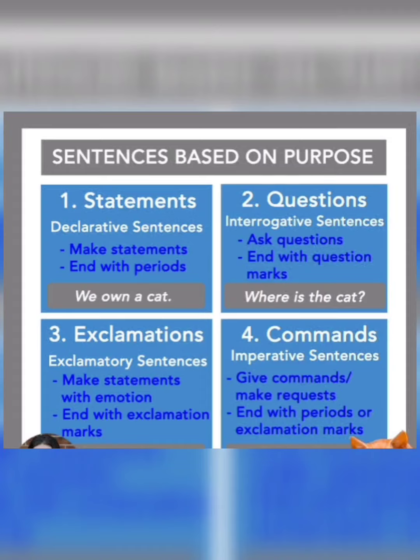Declarative sentences means a simple sentence. It has negative sentences and positive sentences — negative sentences are formed by adding 'not.' How can we identify these sentences? Declarative sentences can be identified easily: at the end of the sentence we can see a full stop.